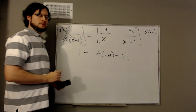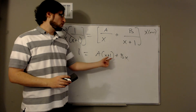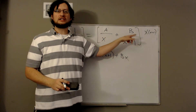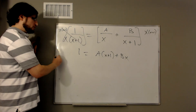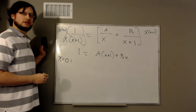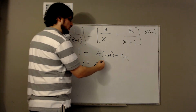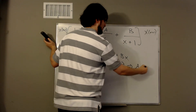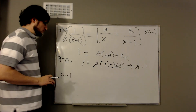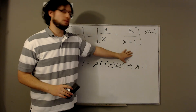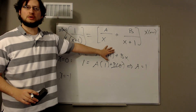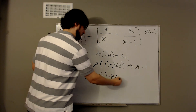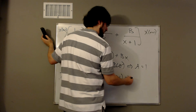Our goal is to figure out what a and b are. This has to be true for all x values. So it has to be true for some specific values. If x is 0, we get a times 1 plus b times 0, which tells me a is 1. If x is negative 1, it makes the b term's factor go to 0. We get negative b equals 1, which tells me b is negative 1.